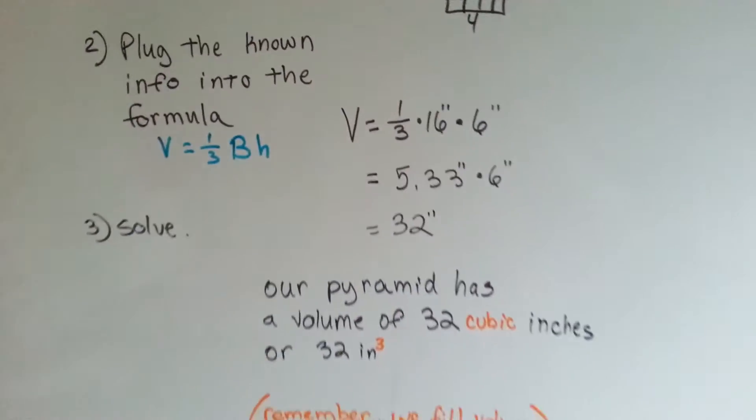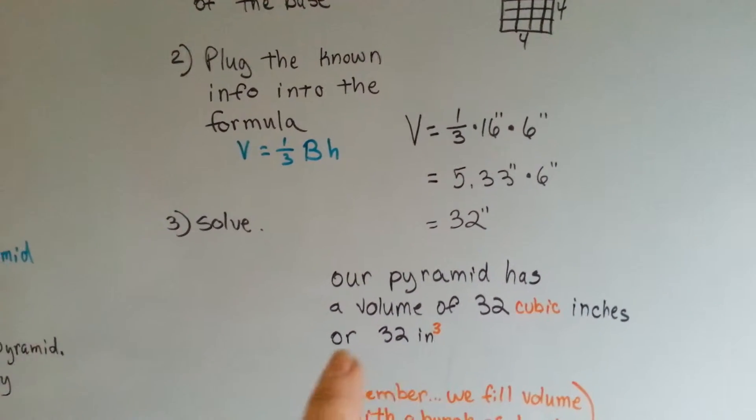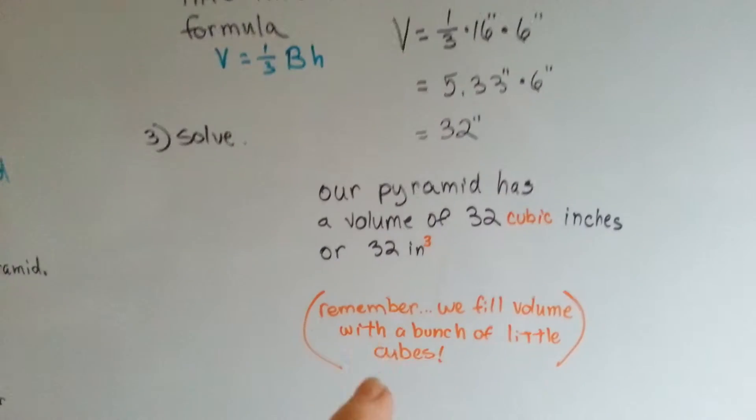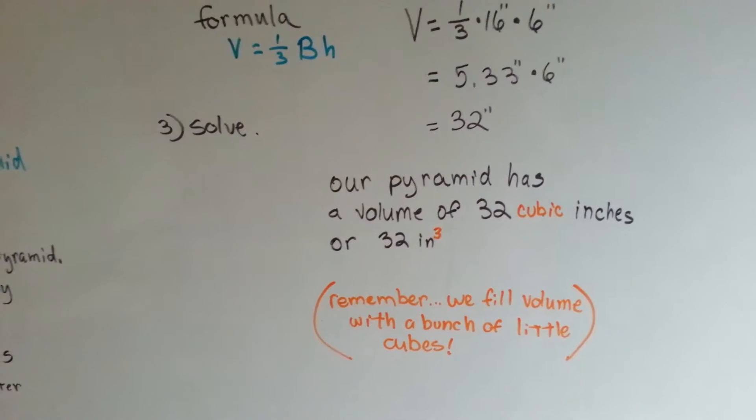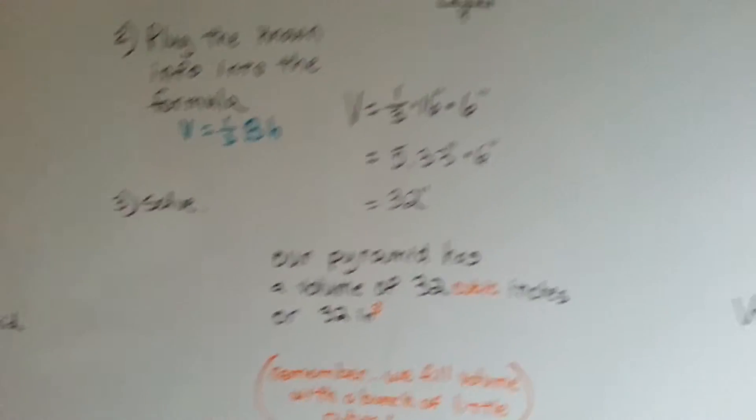Now solved, our pyramid has a volume of 32 cubic inches, or 32 inches cubed. Because remember, we're filling the volume with a bunch of little cubes, like a bunch of little sugar cubes or ice cubes.